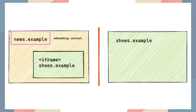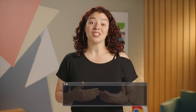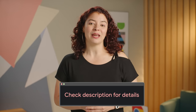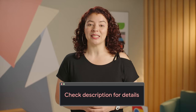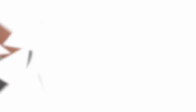For example, let's say news.example, the embedding context, embeds an ad from shoes.example in a fenced frame. News.example cannot exfiltrate data from the shoes.example ad, and shoes.example cannot learn first-party data from news.example. Check out the article in the description for documentation about fenced frames, the Protected Audience API, shared storage, and more.